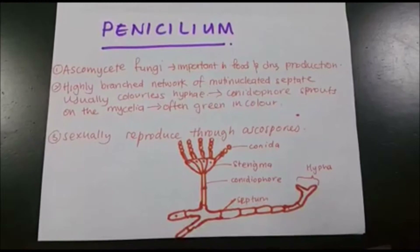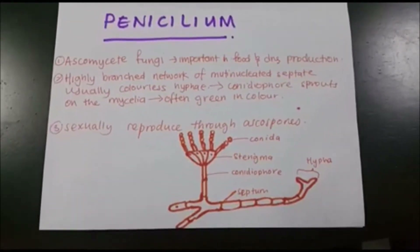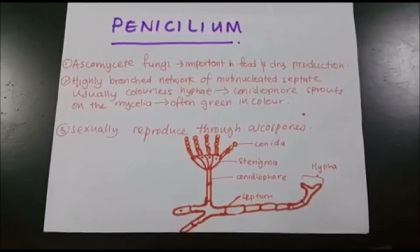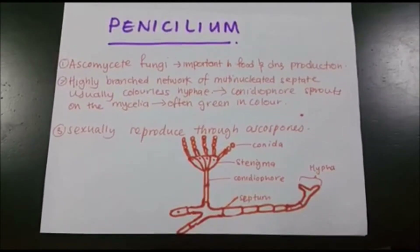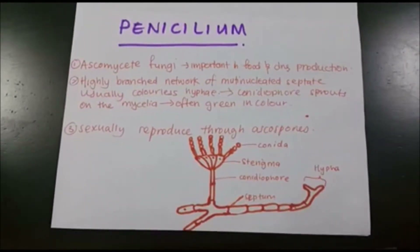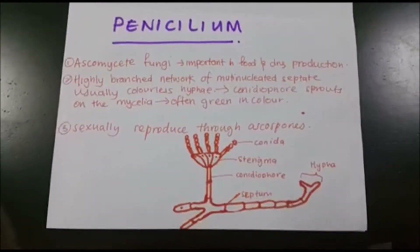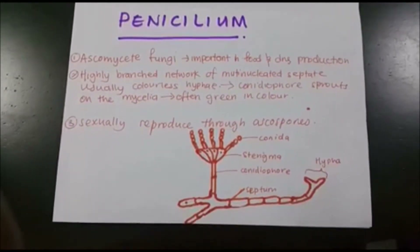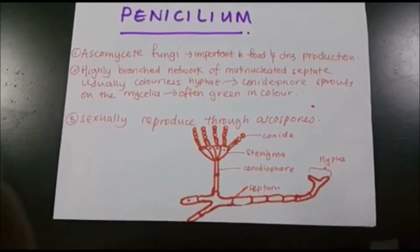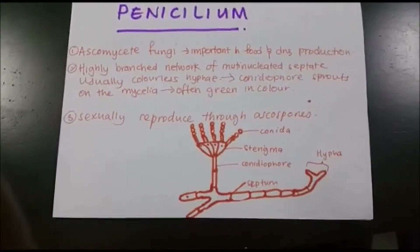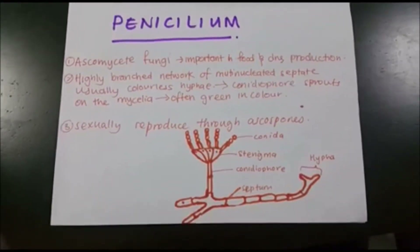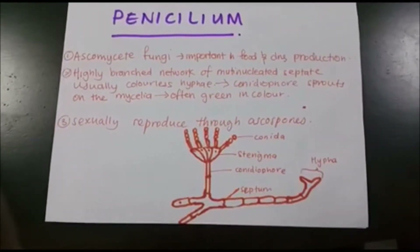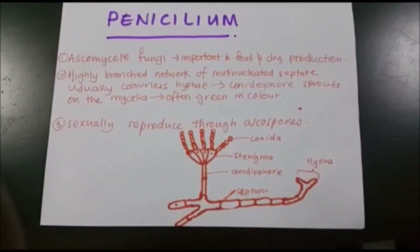Penicillium is an ascomycete fungi, important in food and drug production. It has a highly branched network of multi-nucleated septate with colorless hyphae. Its conidia spores are located on the mycelia and often appear green in color. It reproduces sexually through ascomata.